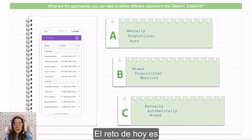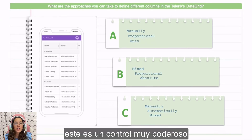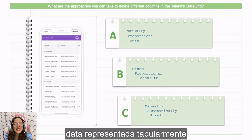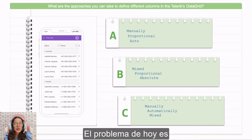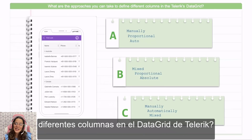The challenge for today is about the Telerik Data Grid. This is a powerful control that allows you to easily visualize and edit tabular data in your .NET MAUI applications. The problem for today is: what are the approaches that you can take to define different column types in the Telerik Data Grid?